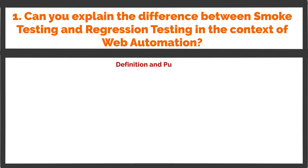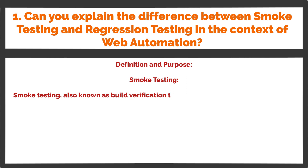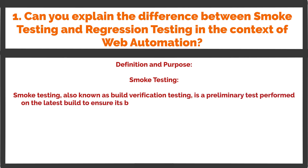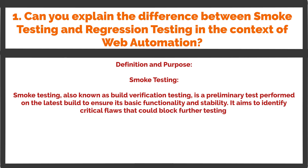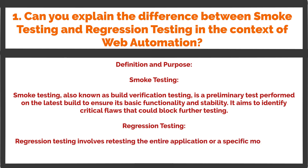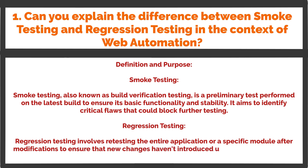Smoke testing, also known as build verification testing, is a preliminary test performed on the latest build to ensure its basic functionality and stability. It aims to identify critical flaws that could block further testing. Regression testing involves retesting the entire application or a specific module after modifications to ensure that new changes haven't introduced unexpected defects and that existing functionalities remain intact.